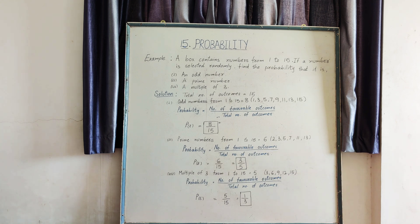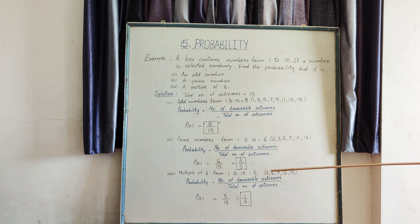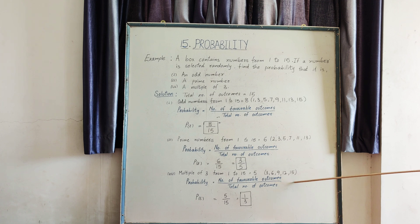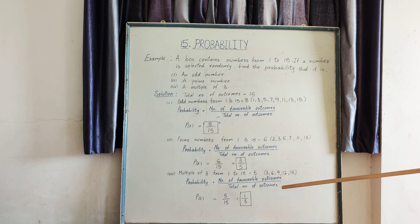Now to find the probability of a multiple of 3, we first identify the multiples of 3 from 1 to 15. They are: 3, 6, 9, 12, and 15 — so there are 5 outcomes. Using the formula, probability equals number of favorable outcomes upon total number of outcomes, so the probability that a selected number is a multiple of 3 equals 5 upon 15, which is equal to 1 upon 3.